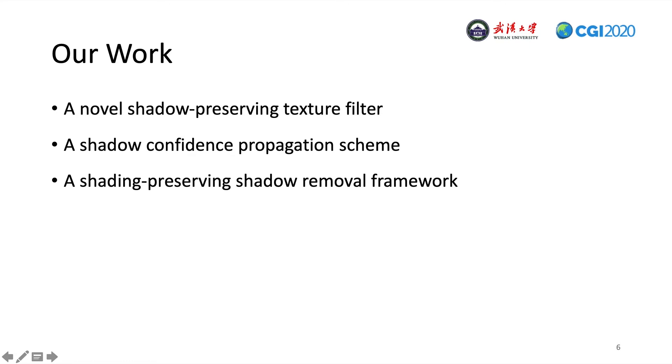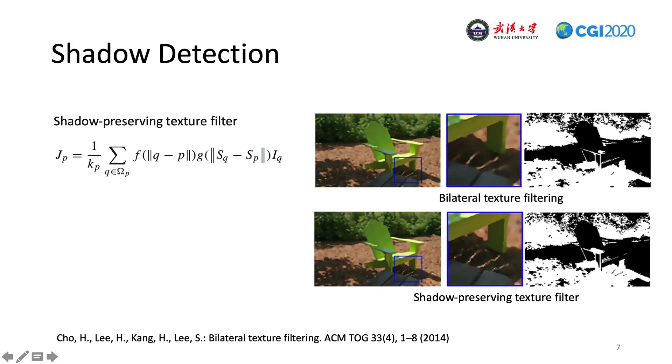Next, I will show you the details in our paper. First, we apply a shadow-preserving texture filter to the input image. This is a modification of the bilateral texture filter with shadow-aware texture similarity instead of structure-aware texture similarity. The shadow-aware texture similarity is the average shadow boundary confidence of the region. We can see the comparison between the two similarities on the right side.